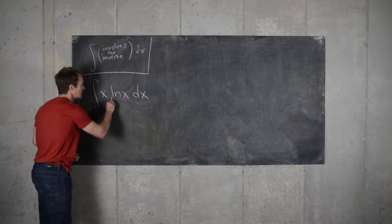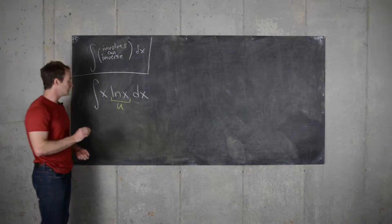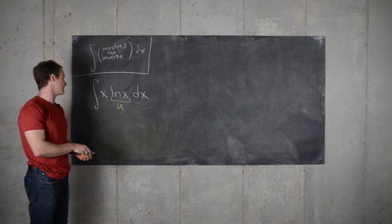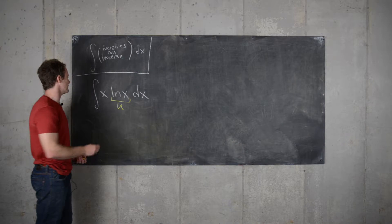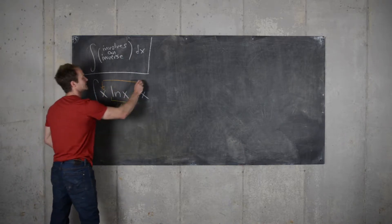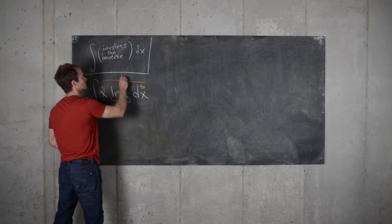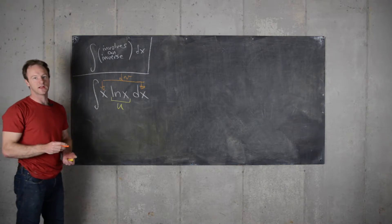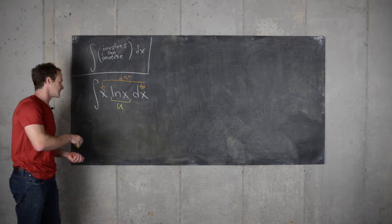So that being said, we want to let this be u because we know the derivative of the natural log of x. But finding the anti-derivative may be tricky and that means what's left, we let that be dv. So let's see what we get from there.